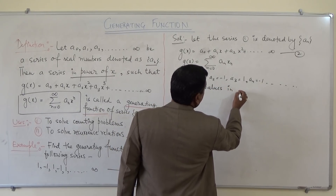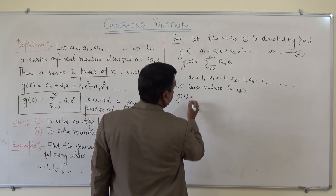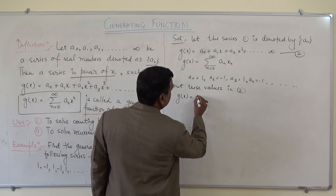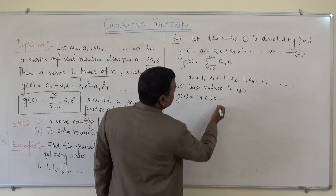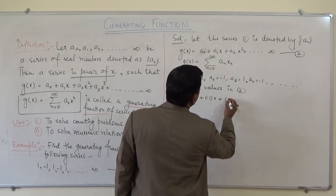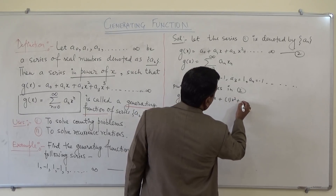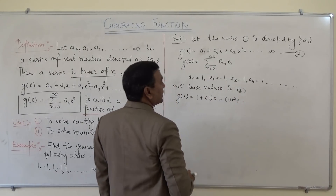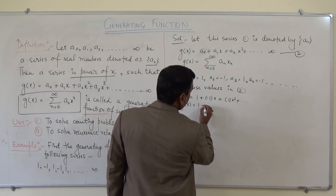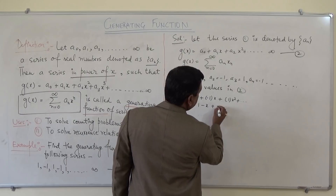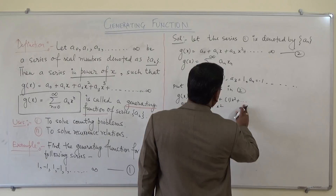Substituting these values into G(x), we get G(x) equals 1 plus (−1)·x plus 1·x² and so on, which comes out to be G(x) equals 1 minus x plus x² and so on.